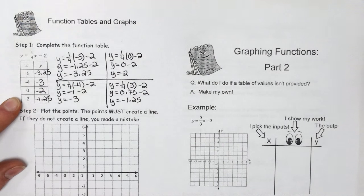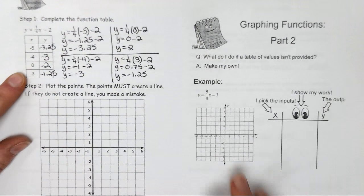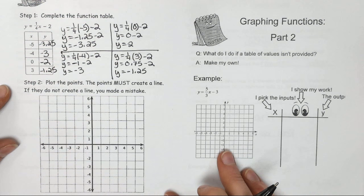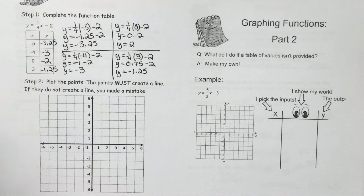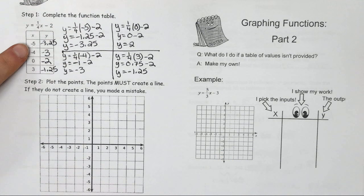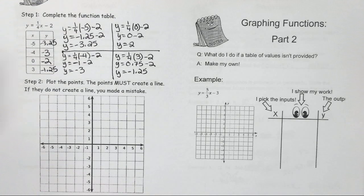So my first step there is to fill out the table, and then step 2 is to plot the points. The points must create a line. If they don't create a line, you made a mistake. All of the functions that we're graphing this year are considered linear. They make lines. If it doesn't make a line, then you want to go back and check your work.